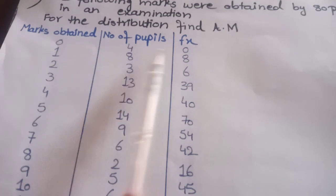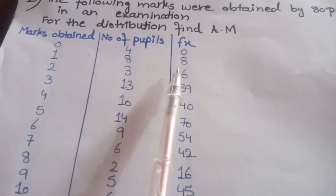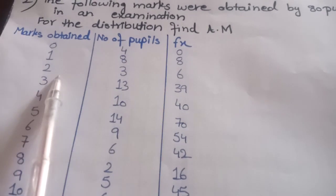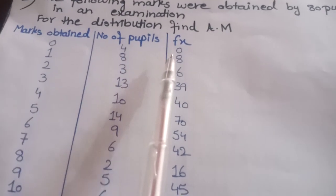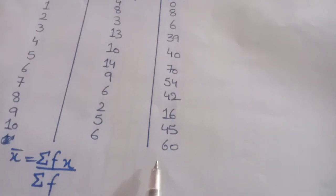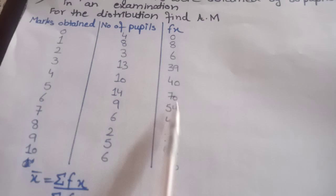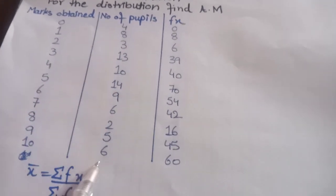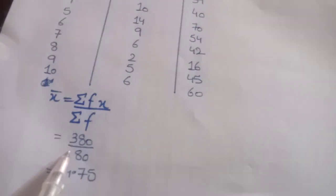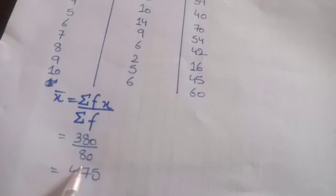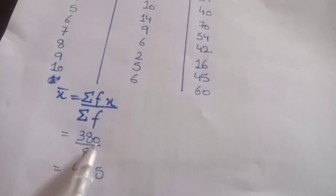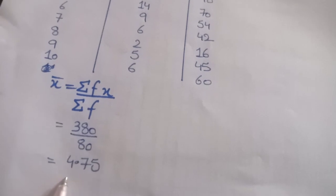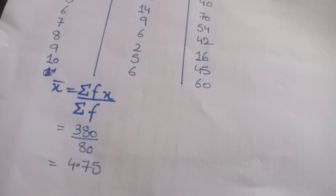We will multiply x and f to get fx. 0 multiplied by 4 is 0; 1 multiplied by 8 equals 8; 2 times 3 gives us 6. Similarly, we will multiply x and f to get fx for all rows. At the end, we calculate summation fx — sum up all the fx values — and total frequency. Adding them up gives us 380 divided by 80. Since 80 pupils are given, summation fx is 380 divided by 80, giving arithmetic mean as 4.75.